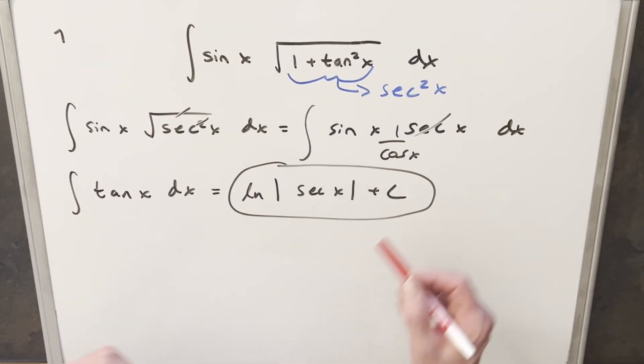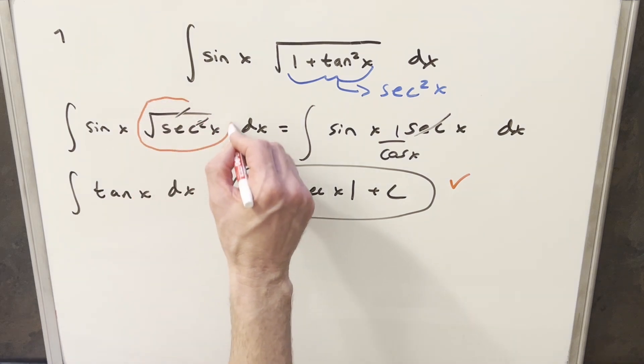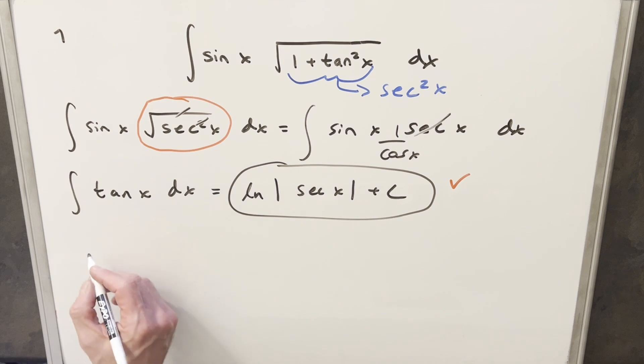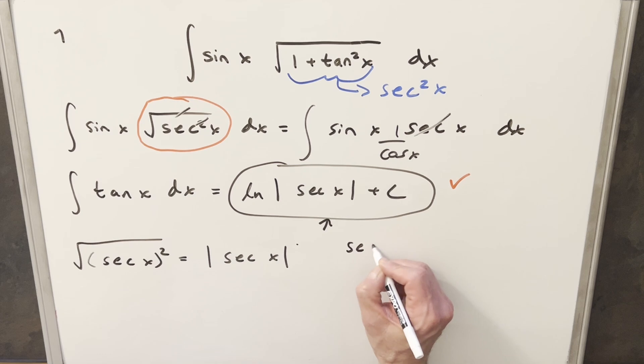Now that was pretty quick and easy, and this solution does match the MIT solution. But there is one problem. What we did here is not quite exactly true. Looking at this case where we have something squared inside the square root, in this case secant x squared, when we do this, the value is actually absolute value of secant x. So this answer is going to be fine as long as secant x is greater than zero, and in these cases we can just drop the absolute value.